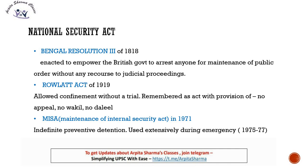Before the National Security Act, there were some similar laws. The first was the Bengal Regulation of 1818, which empowered the British government to arrest any person for maintenance of public order without any recourse to judicial proceedings. Then there was the Rowlatt Act of 1919 — which we have heard of often — it allowed confinement without a trial. It is remembered as the 'No appeal, no vakeel, no daleel' Act. If a person was confined under the Rowlatt Act, no appeal would be entertained, no lawyer would be provided, and no argument would be heard.